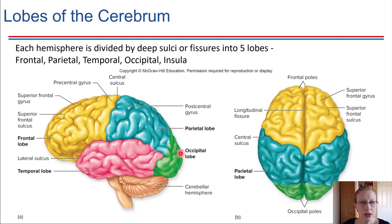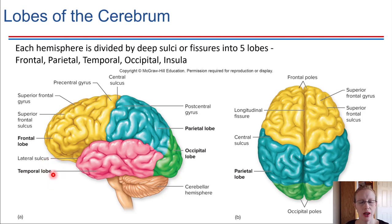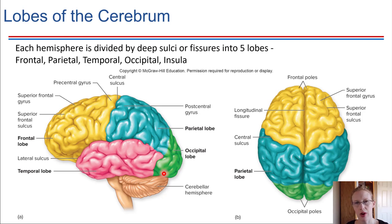At the very back of the cerebrum, we have the occipital lobe. The occipital lobe is where a lot of our vision perception comes from. There is a nerve that goes from our eyes straight back to the occipital lobe, and a lot of the interpretation of what we see happens there. The occipital lobe also allows us to coordinate fine motions needed for focusing our eyes.